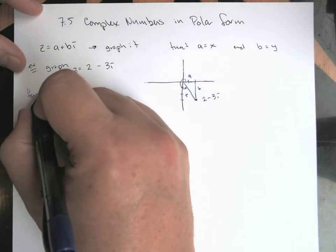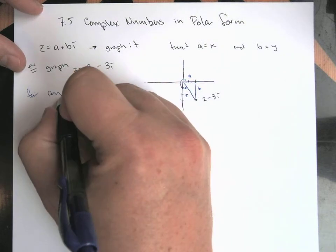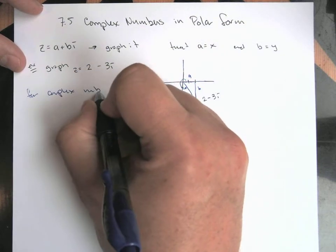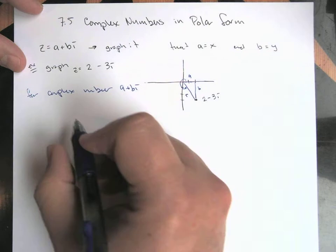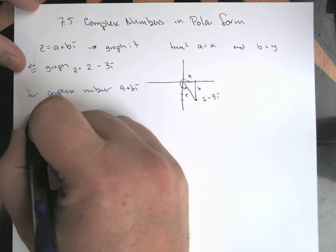So now, for complex number a plus bi, what we get here, right, so a would equal like the radius times the cosine of the angle, b would equal the radius times the sine of the angle.